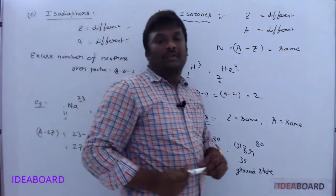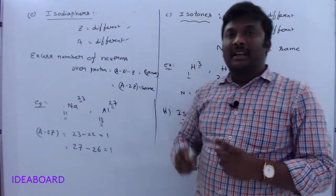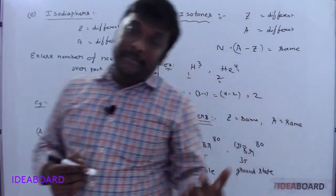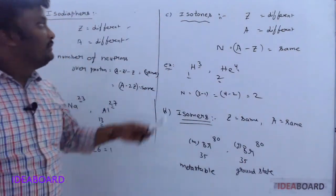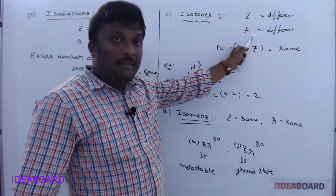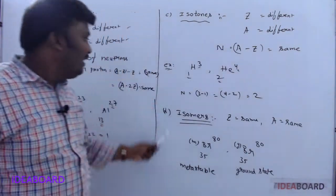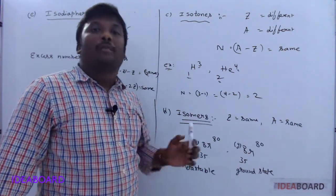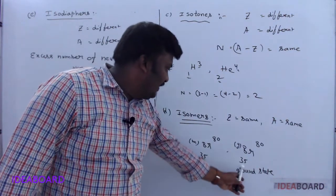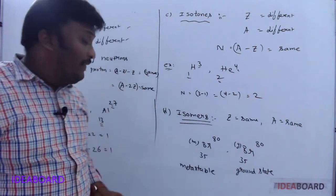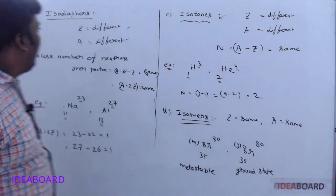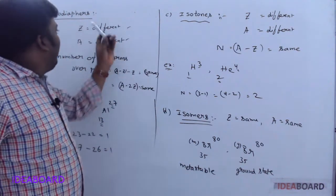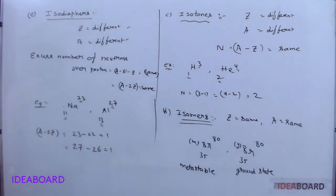To summarize the classification of nuclei: Isotopes — same atomic number, different mass numbers. Isobars — same mass number, different atomic numbers. Isotones — different atomic number, different mass number, but same number of neutrons. Isomers — same atomic number, same mass number, but different radioactive properties (e.g., metastable vs. ground state). Isodiaphers — different atomic numbers, different mass numbers, but same excess number of neutrons (A - 2Z).